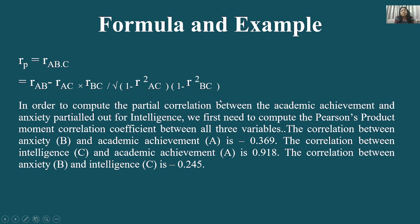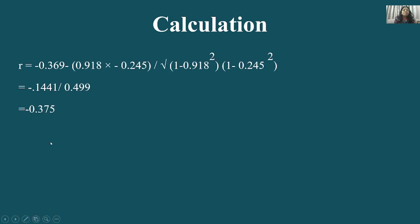Solving this gives a partial correlation coefficient of approximately −0.375. This means that after nullifying the effect of intelligence, academic achievement and anxiety have a negative correlation, and it is not very large — less than 0.5.